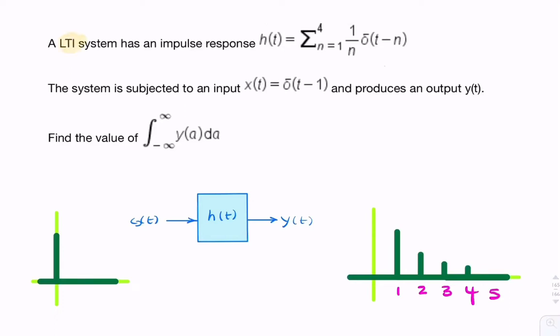This question describes an LTI system using an impulse response and asks for the output, or the area under the output, given the input is a delayed impulse. There are three stages to looking at a question like this.